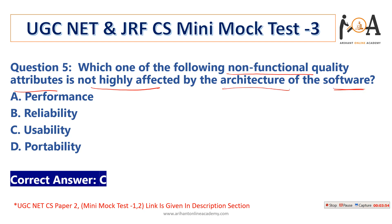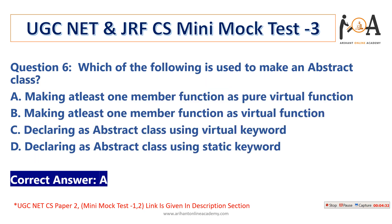Which one of the following non-functional quality attributes is highly affected by the architecture of software? Performance is affected by architecture — if the architecture has low complexity, performance and efficiency will be better. Reliability and portability also depend on architecture. However, usability is a non-functional quality that is not significantly affected by the architecture of a software; it depends more on functionality.